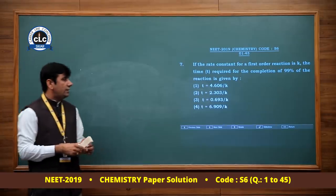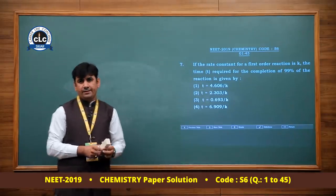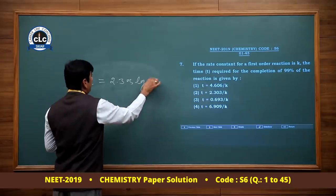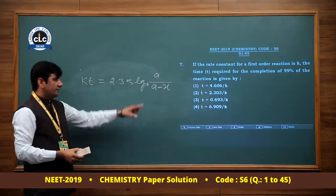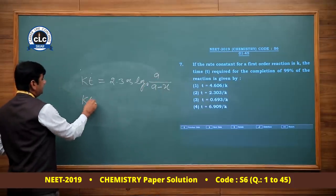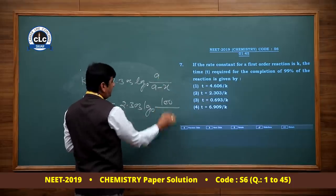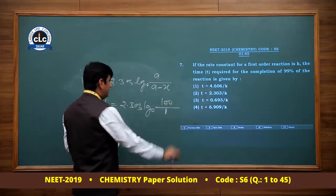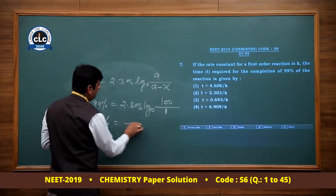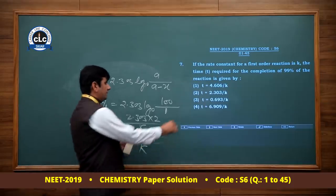Question number 7: Chemical kinetics. If the rate constant for a first order reaction is k, the time required for 99% completion: kT = 2.303 log(initial concentration / concentration at time t). For 99% completion, initial = 100, remaining = 1. So T(99%) = 2.303 log(100/1) = 2.303 × 2 / k = 4.606/k. Option 1 is correct.